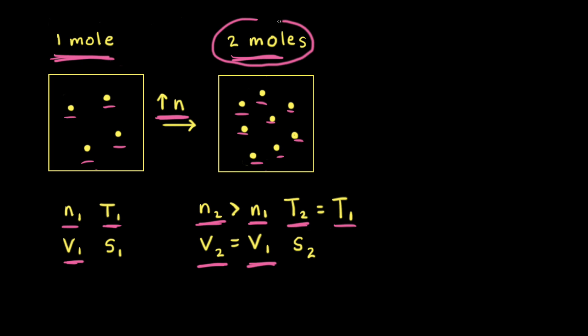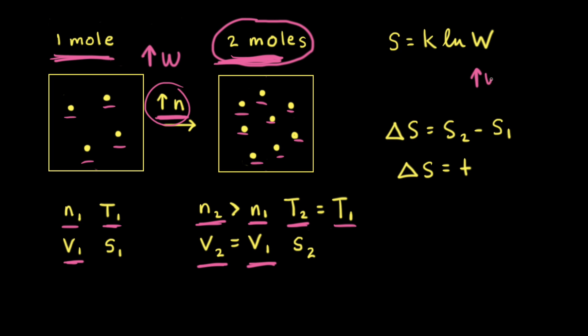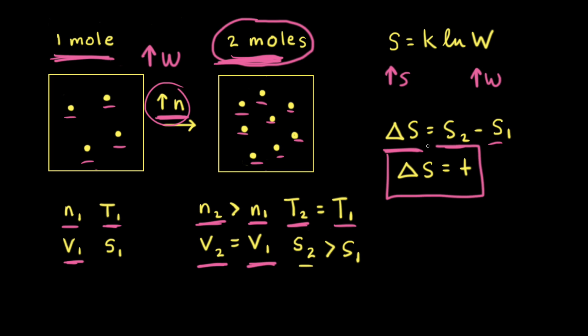Because we have increased the number of particles, there are more possible arrangements of particles and also more ways to distribute the energy. Therefore, when we increase the number of moles, there's an increase in the number of possible microstates. Increasing the number of microstates in a system increases the entropy. Therefore, the final entropy S2 is greater than the initial entropy S1, and the change in entropy is positive. So increasing the number of moles of gas particles increases the entropy of the system.